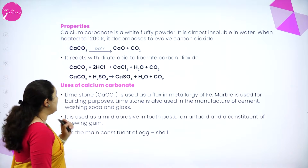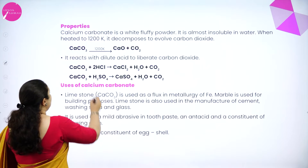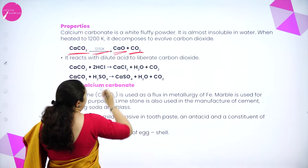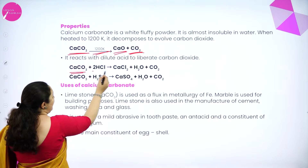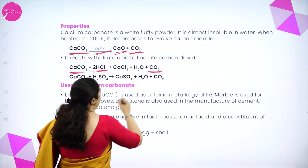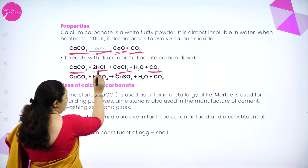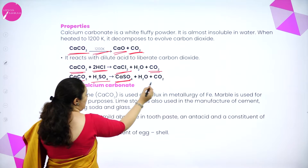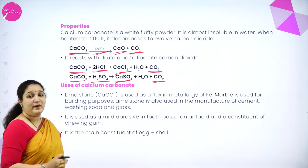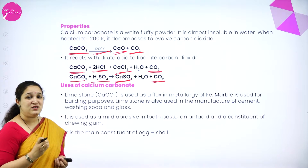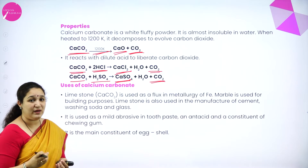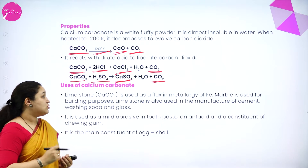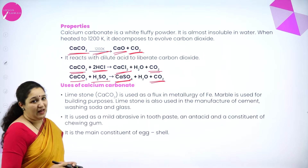Properties of calcium carbonate: on heating at high temperature, it forms calcium oxide and carbon dioxide. Calcium carbonate reacts with acids to liberate carbon dioxide gas and form the salt of that acid — for example, with HCl it forms calcium chloride, and with H₂SO₄ it forms calcium sulfate.